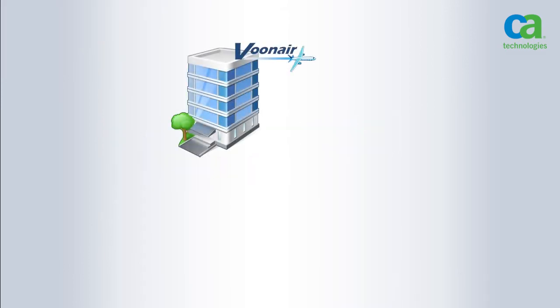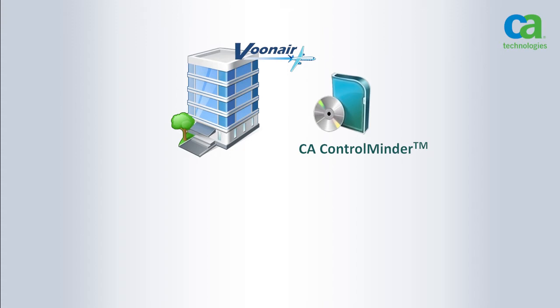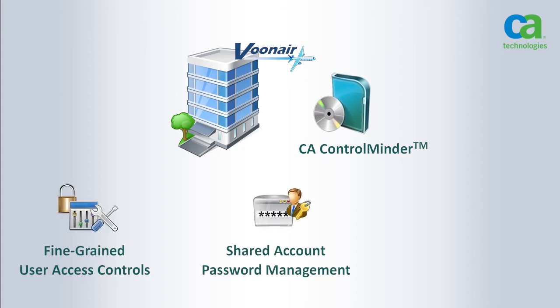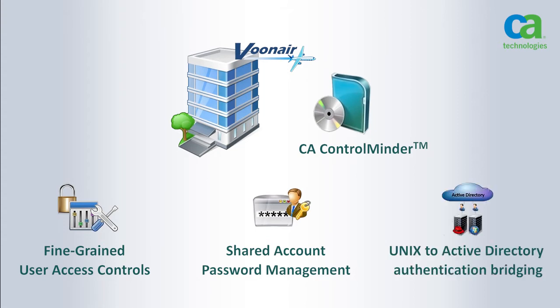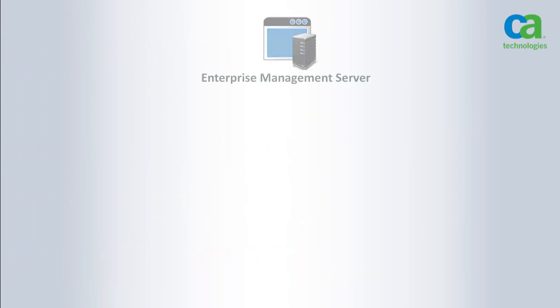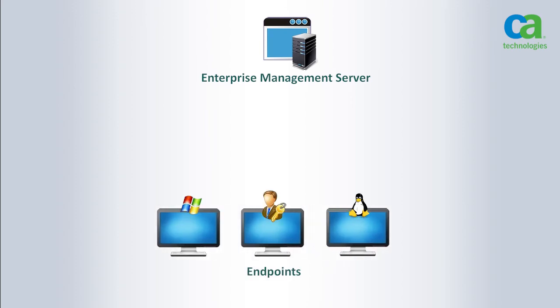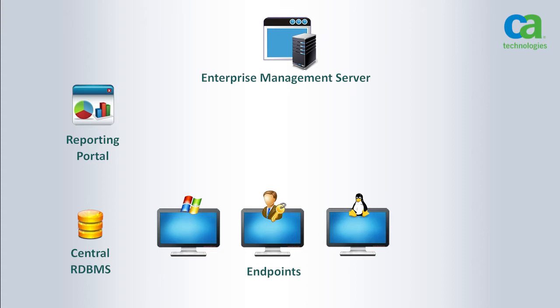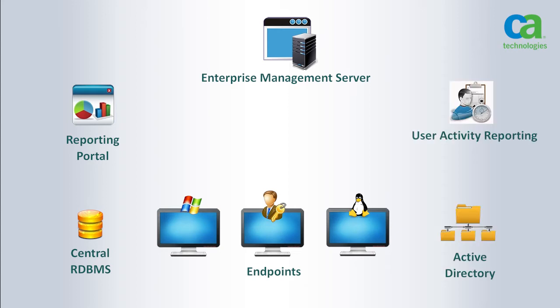Many organizations use CA Control Minder to implement fine-grained user access controls, shared account password management, and UNIX to Active Directory authentication bridging. One of the keys to successfully implementing CA Control Minder is to understand its architecture. CA Control Minder has four key components: enterprise management server, endpoints, report portal, and a central database. It also integrates with Active Directory and the CA User Activity Reporting module.